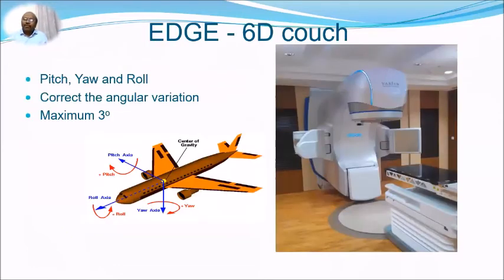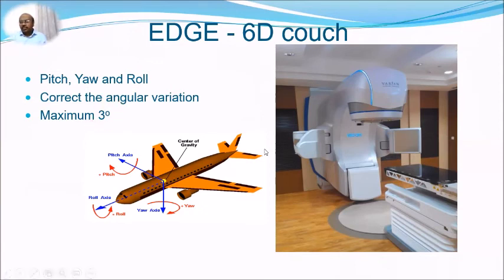A 6D couch is not an absolute necessity for SBRT but is useful if available. It can correct for translational and rotational errors — pitch, yaw, and roll — with a maximum correction of approximately three degrees.